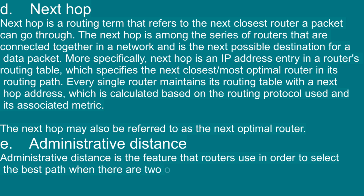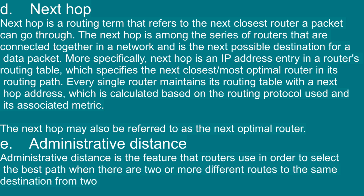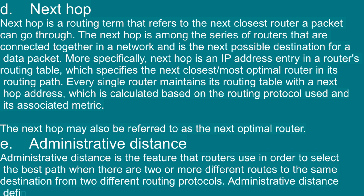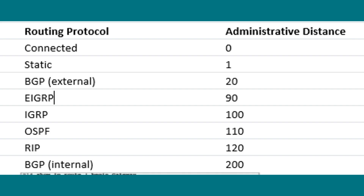E — Administrative Distance: Administrative distance is the feature that routers use to select the best path when there are two or more different routes to the same destination from two different routing protocols. Administrative distance defines the reliability of a routing protocol.